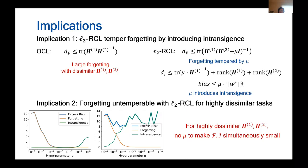The first implication is that we can show that the L2 RCL algorithm can temper forgetting by introducing intransience in the trade-off actively. We can see that if we do not add any regularizer in the OCL algorithm with dissimilar two tasks, the forgetting can be arbitrarily large.